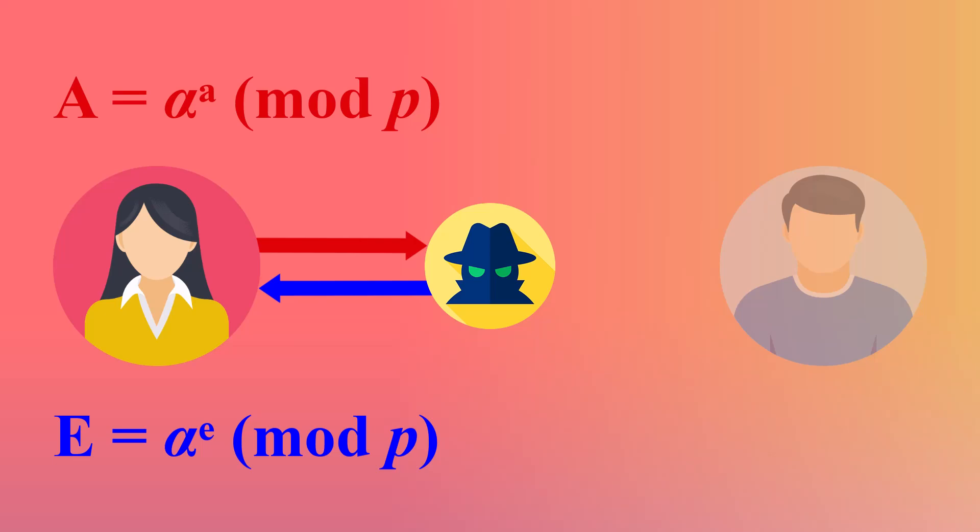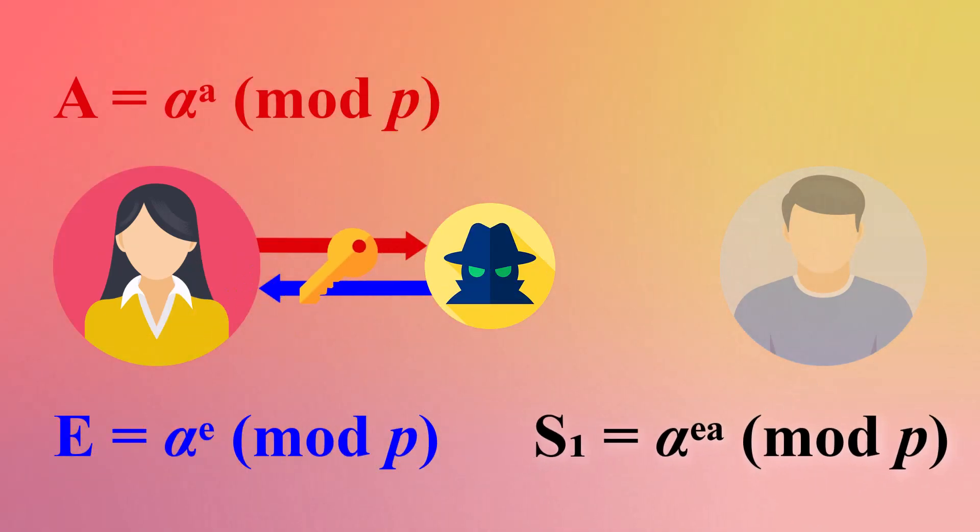Alice and Eve use each other's public values to compute a shared secret, which Alice thinks she shares with Bob. In reality, this shared secret is between Alice and Eve.